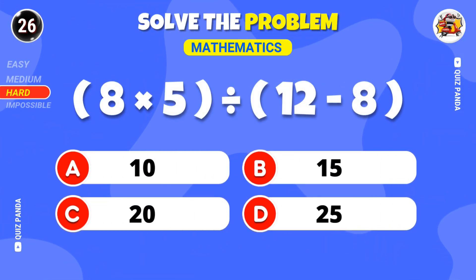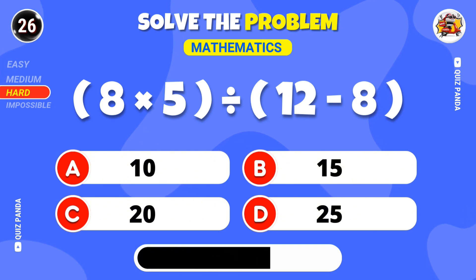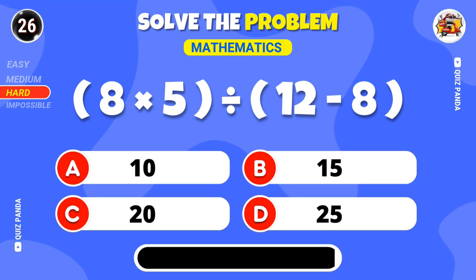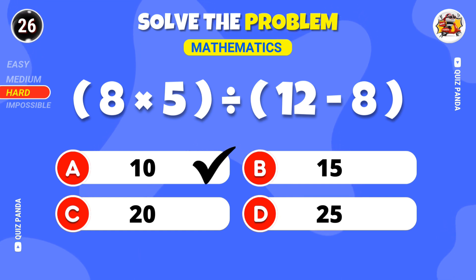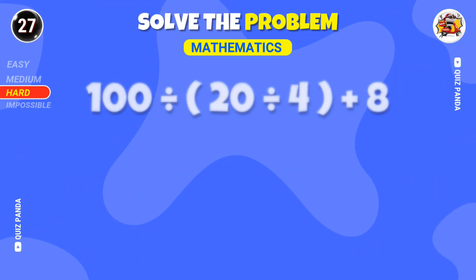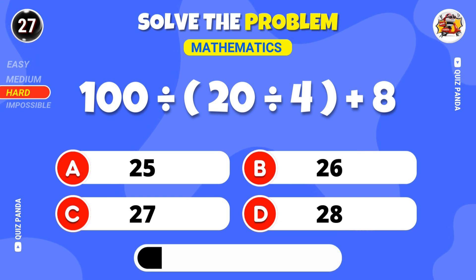Can you calculate this? 8 times 5 divided by 12 minus 8. Try this out — 100 divided by 20 divided by 4 plus 8.